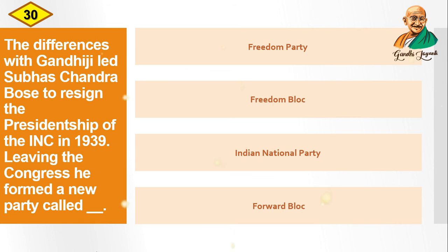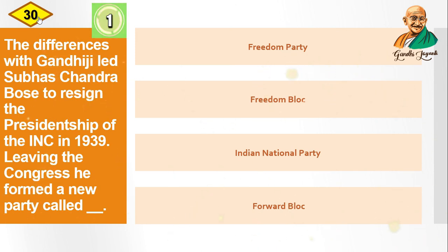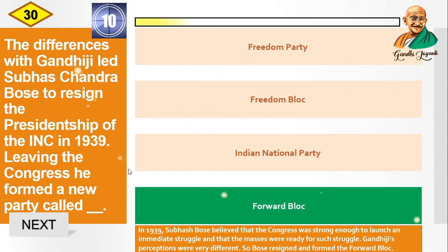Question: Differences with Gandhiji led Subhas Chandra Bose to resign the presidentship of the INC in 1939. Leading the Congress, he formed a new party called — options are: Freedom Party, Freedom Block, Indian National Party, Forward Block. The correct answer is Forward Block. Gandhiji's perceptions were very different, so Bose resigned and formed the Forward Block.